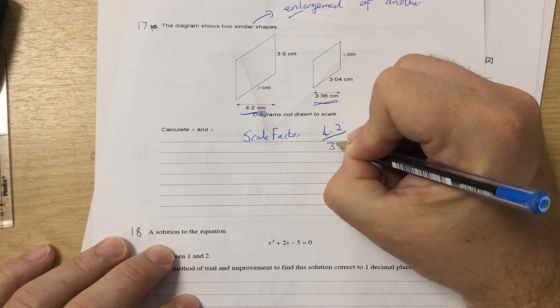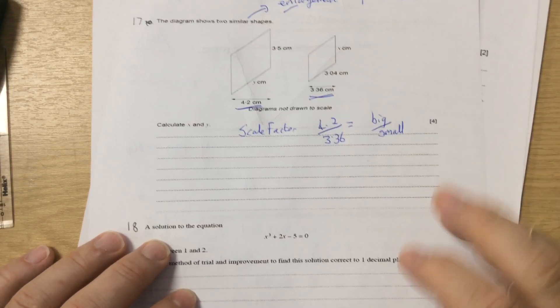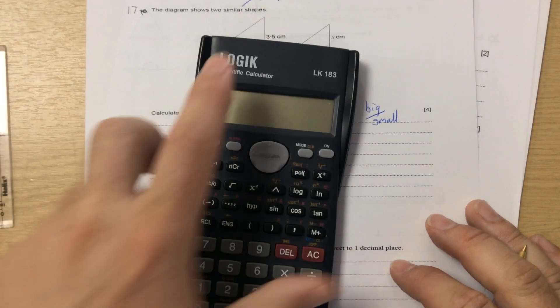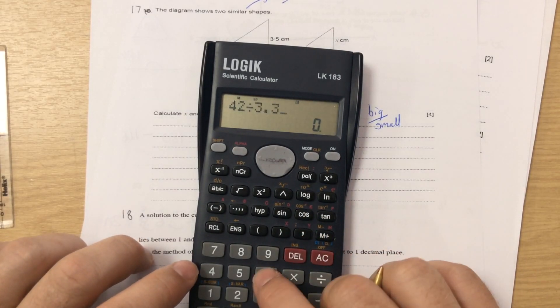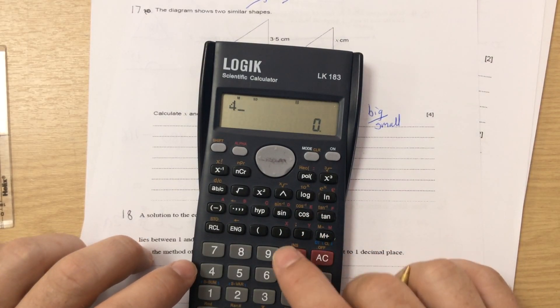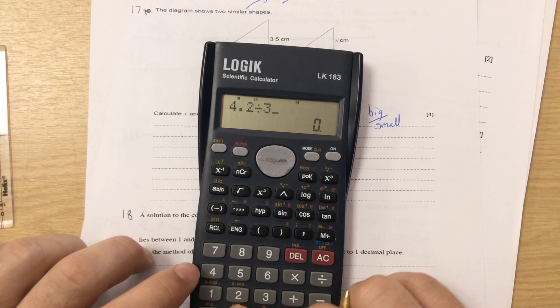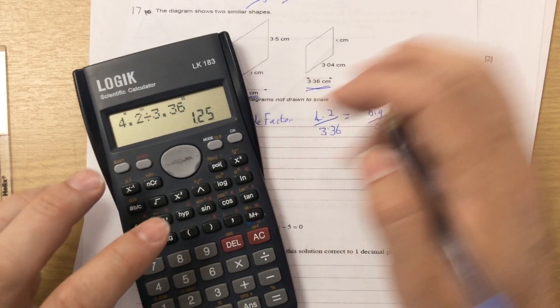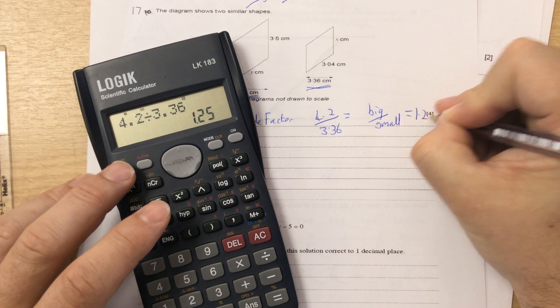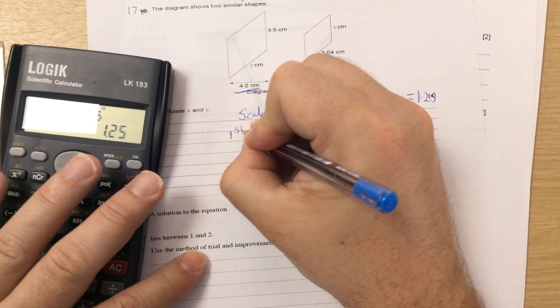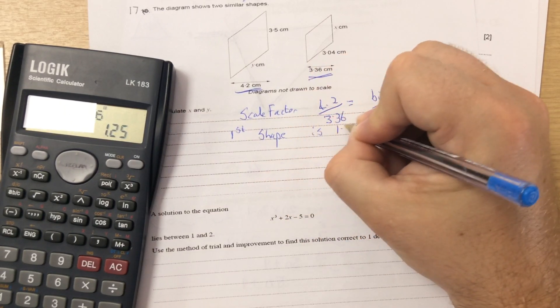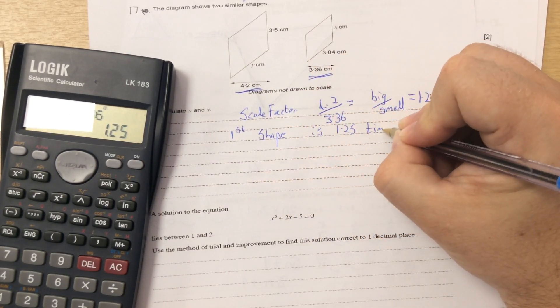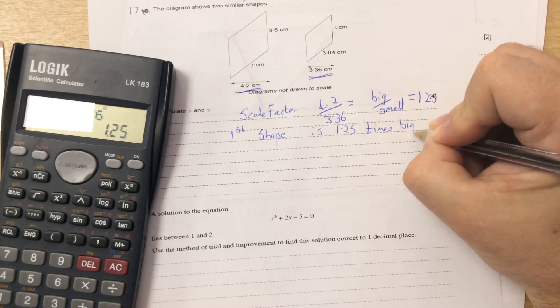So to work out the scale factor, I do the big one divided by the small one. So in this case, it's 4.2 divided by 3.36. 4.2 divided by 3.36 is 1.25. So that means that the first shape, every side in the first shape is 1.25 times bigger than the second shape.